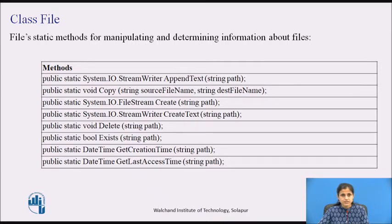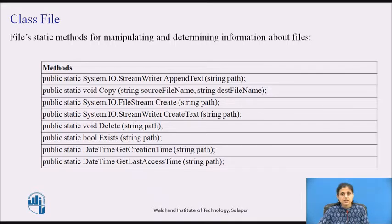The next method is Create. It accepts a single parameter, i.e., path. It creates or overwrites a file at the specified path. The CreateText method creates or opens a file for writing UTF-8 encoded text. If the file already exists, its contents are overwritten.